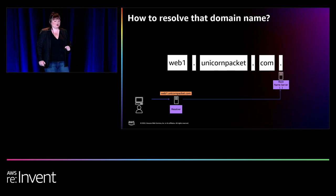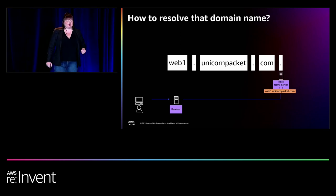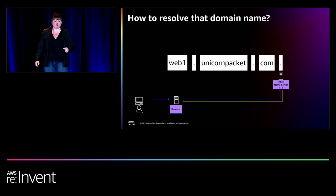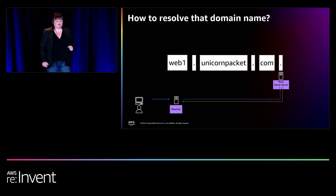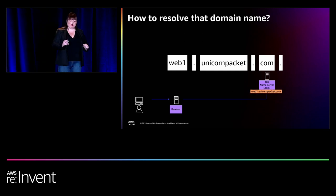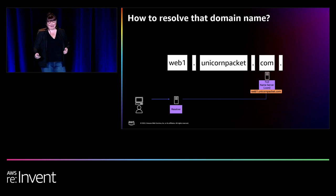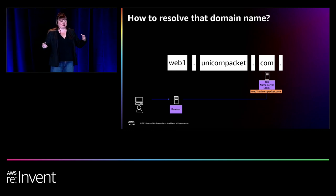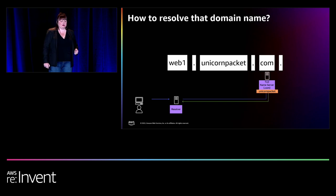The root name server doesn't know about web1.unicornpacket, but it knows about .com. So it responds to the resolver with a name server for the .com top-level domain. The resolver forwards a request onto a top-level domain name server. The TLD name server doesn't know about web1, but it knows about Unicornpacket — because the .com TLD knows about domain names that share its commonality — so it responds to the DNS resolver with the Unicornpacket name server.